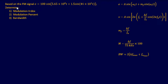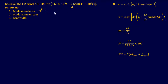Let's do a practice problem. Based on the frequency modulation signal shown, determine the modulation index, modulation percent, and bandwidth. Looking at the equation, it matches the standard FM form, so we can identify a few things. M_f is your modulation index — you can very easily spot it just by looking at the equation. Right off the bat, without doing any math, the modulation index is 1.5.